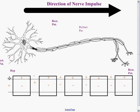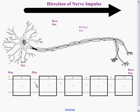Repolarization then occurs at the first node, and the action potential has moved along one node. Once again, this depolarization cannot cause depolarization in the area covered by the myelin sheath, and instead causes depolarization at the next node of Ranvier. Repolarization follows, and the action potential has moved over one more node. A refractory period now exists at the previous node, so the impulse cannot go backwards — it is forced to go forward.